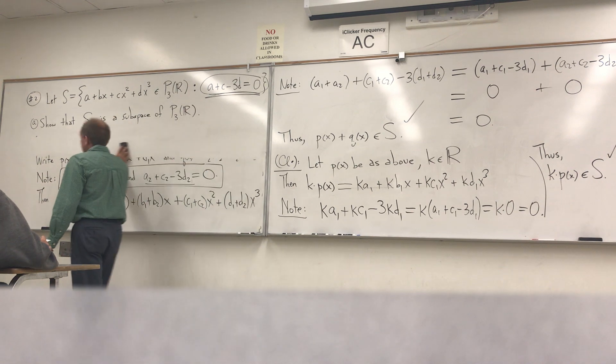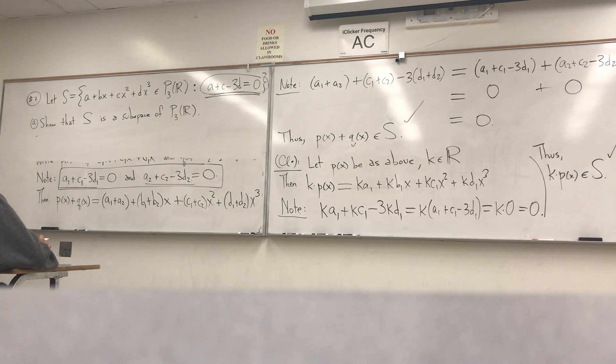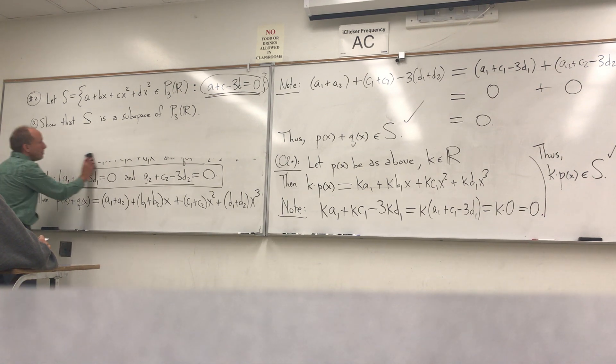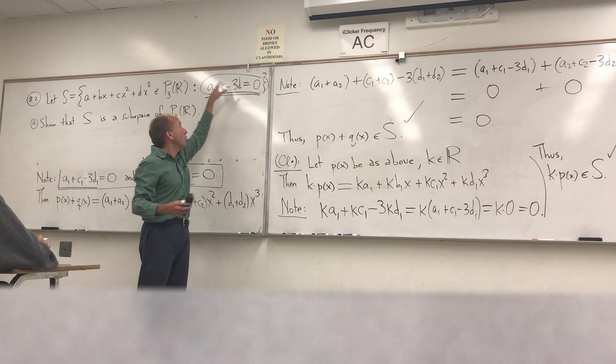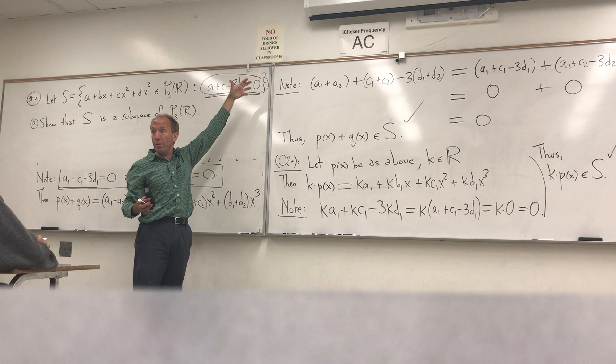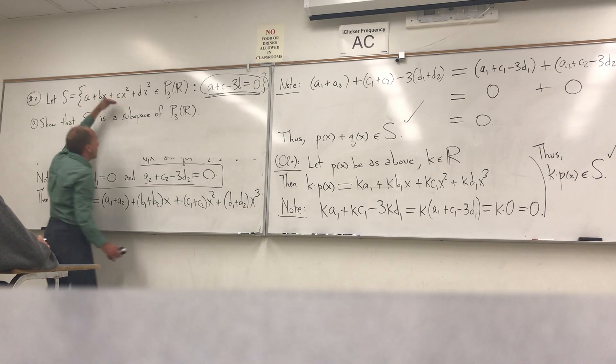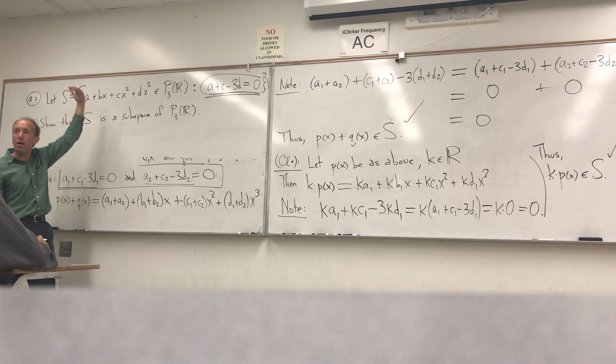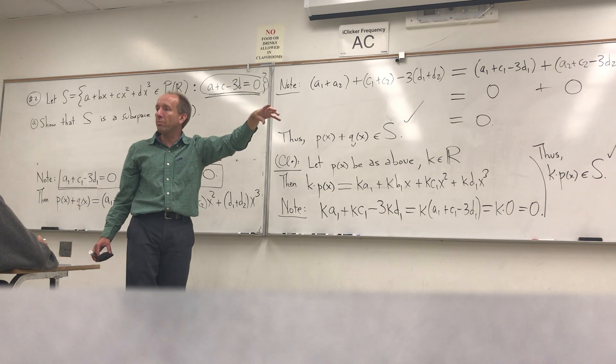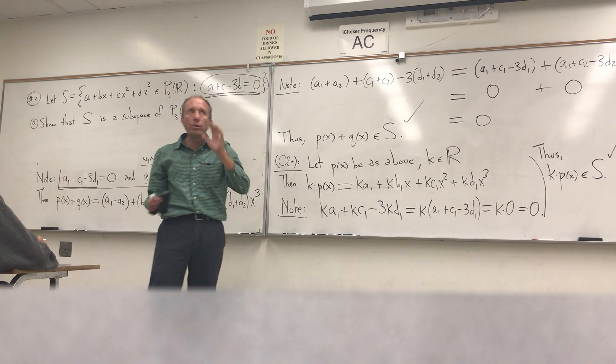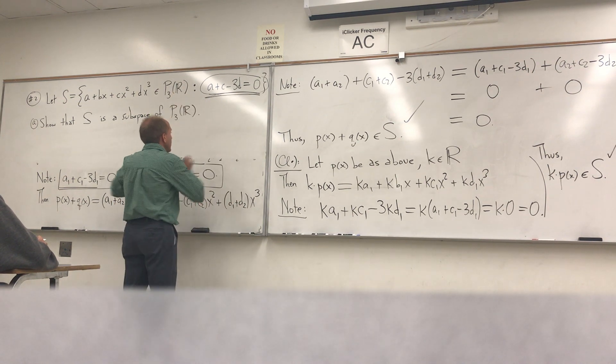So could we also just say that a plus c minus 3d equals zero, if that's a, you can turn that into a matrix and just say it's the null space of 1, 1 divided by 3, would that be good enough? That would not. Because although this equation can be framed in a matrix as like a 1 by 4 matrix, I guess it would be, that's not what my vectors look like. My vectors are not in R4, right? My vectors consist of polynomials in P3 of R.